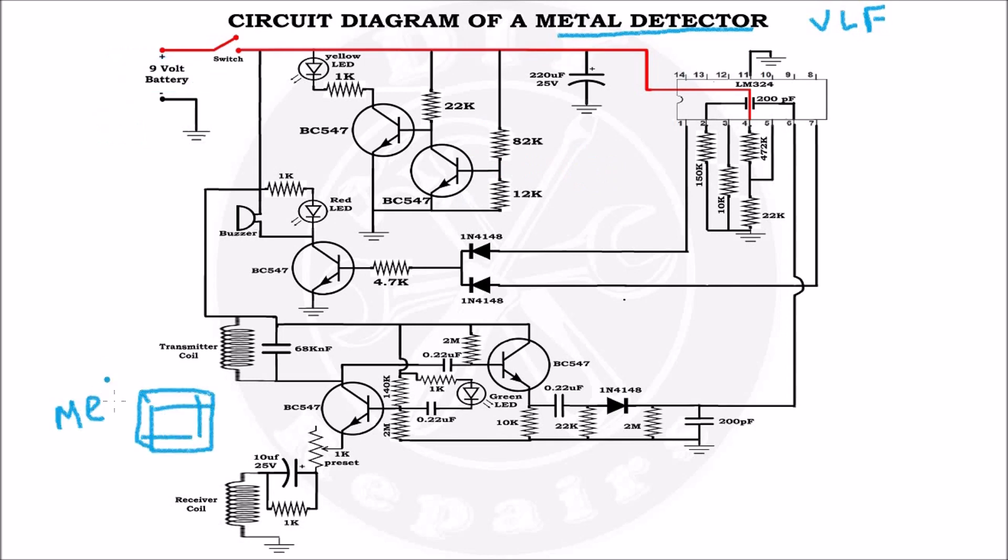When a metal is close to the metal detector and the metal detector does not beep, then check the DC voltage at the base of this transistor. It should be more than 0.7V. If the voltage is there but the metal detector is still not beeping, then check this transistor, buzzer, red LED, and resistance.